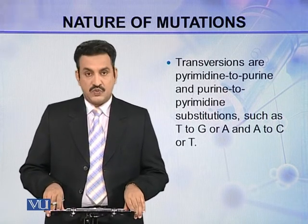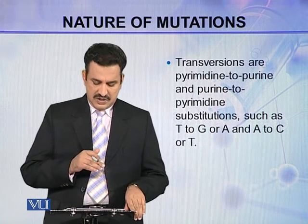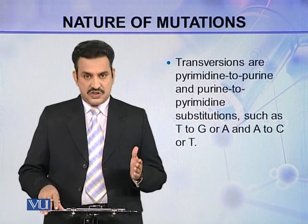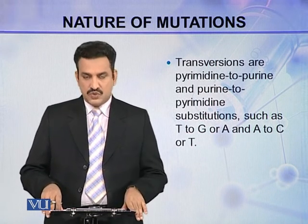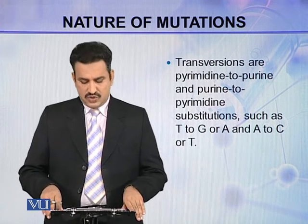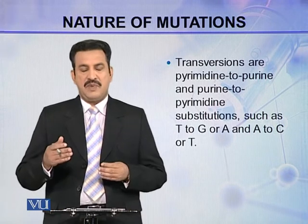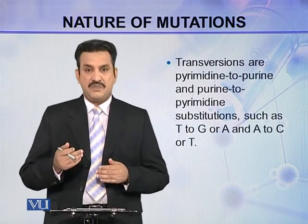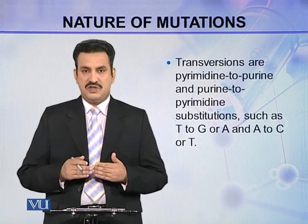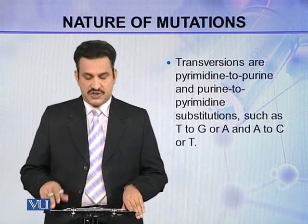Transversions are pyrimidine to purine or purine to pyrimidine substitutions, such as thymine to guanine or adenine, and adenine to cytosine or thymine. So a purine is replaced by a pyrimidine, or a pyrimidine is replaced by a purine. These mutations are called transversions.